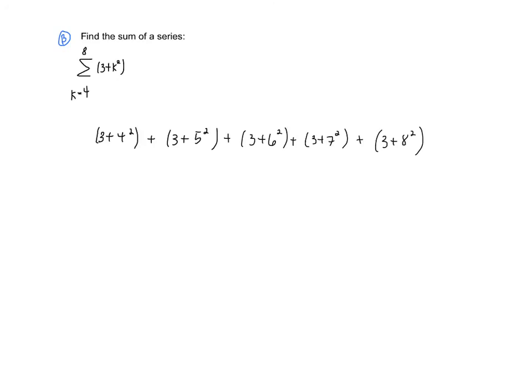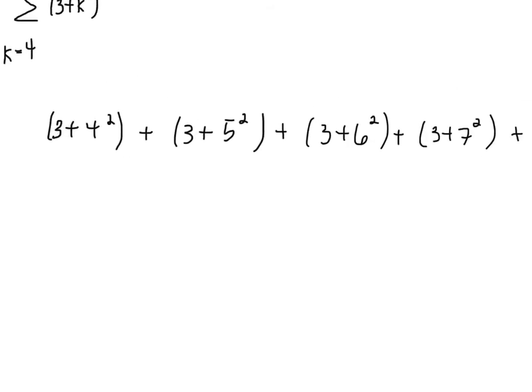When we simplify all these, we get 19 plus 28 plus 39 plus 52 plus 67. So, our answer is 205.